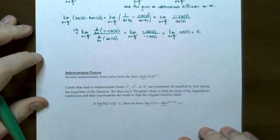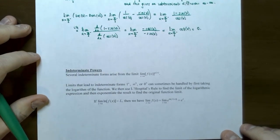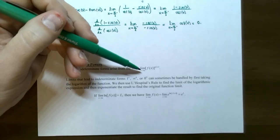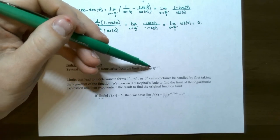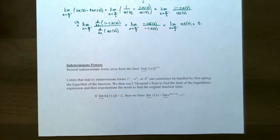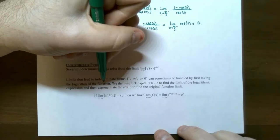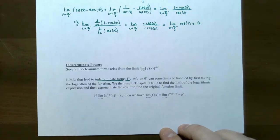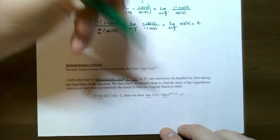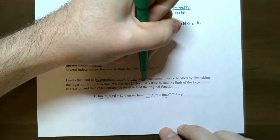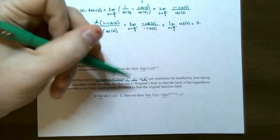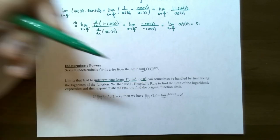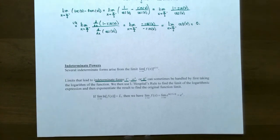The last topic in this section is indeterminate powers. Several indeterminate forms arise when you have a limit of f(x) raised to g(x). You can obtain indeterminate forms 1 raised to the infinity power, infinity to the 0, or 0 to the 0. It might seem these are not indeterminate, but these three are called indeterminate powers and they are handled by first taking the logarithm of the function.